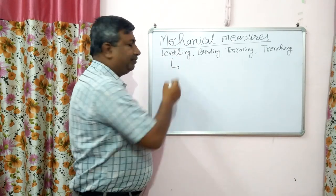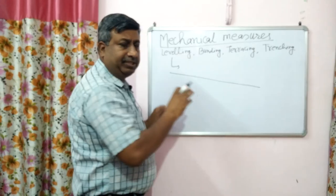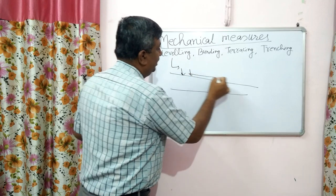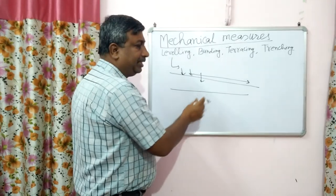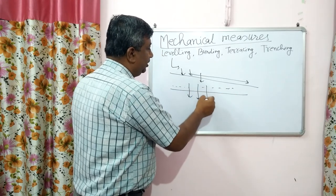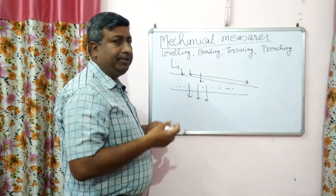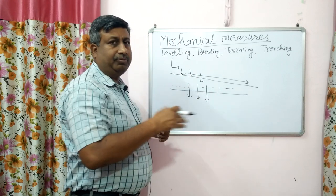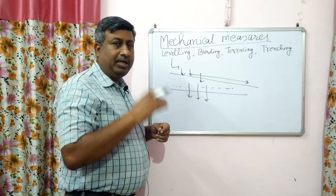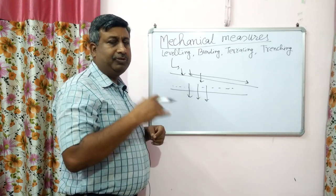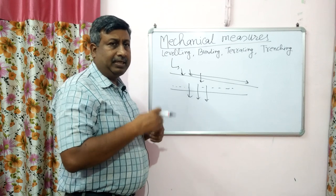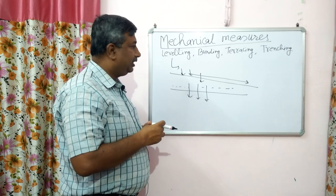Levelling is very simple work. If the field is slopey, land levelling is done so that the surface becomes uniform and smooth. The advantage is that runoff velocity decreases and there is more infiltration and percolation. Different implements are used for land levelling and a gentle slope is also given so that water moves in a direction for drainage or irrigation. The field is levelled to a pre-planned grade — a gentle slope of about 0.5% or 0.6%. Nowadays, laser land levellers are available, which do very good work in land levelling.